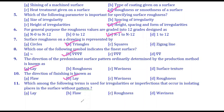Which among the following terms is used for irregularities or imperfections that occur in isolated places on the surface? These are not part of the regular pattern. There is a blowhole also considered as one such defect.